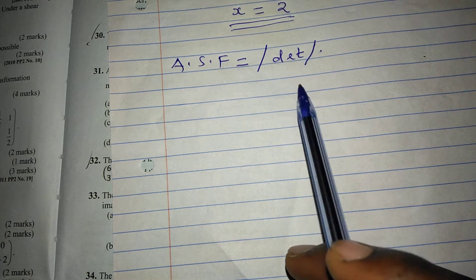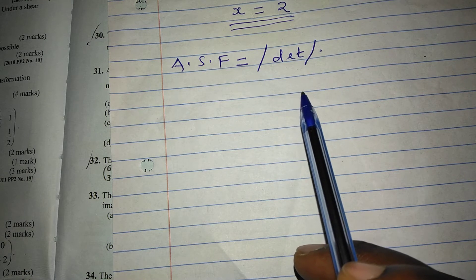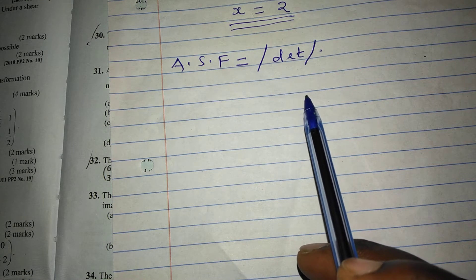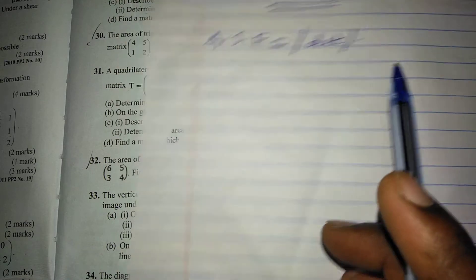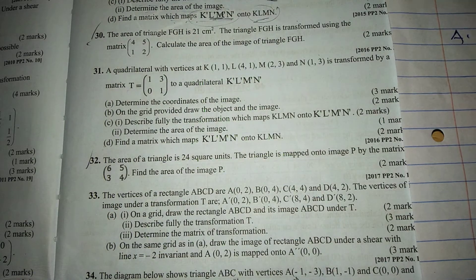For example, if we get determinant as a value like negative 2, then area scale factor will be taken as 2. So the absolute value is what we consider here.